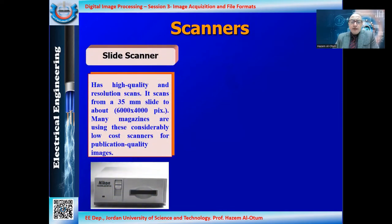There is the slide scanner, which is an older type. It was used with film slides that were shown on a projector. These slides were fed into a slide scanner to convert the image printed on the old film into digital form, usually in color or even grayscale.